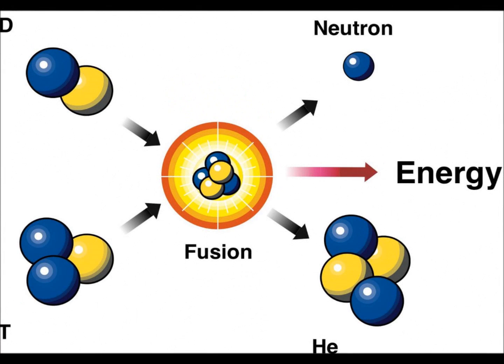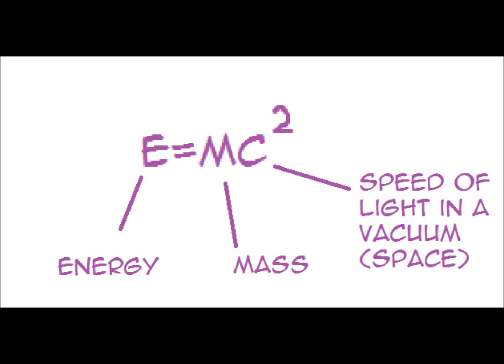Fusion: Two nuclei combine to create a larger nucleus. Nuclei can only fuse if they are brought close together. During fusion, mass is lost and energy is released. Einstein realized mass could be converted to energy, so mass is a form of energy. Therefore, energy and mass are equivalent. E equals mc squared.